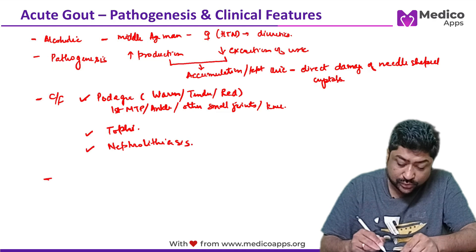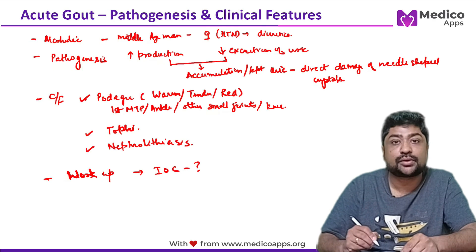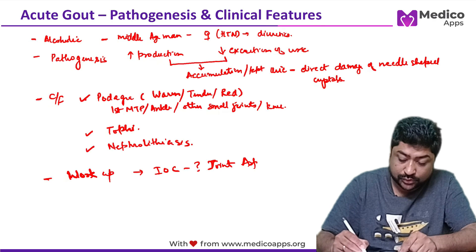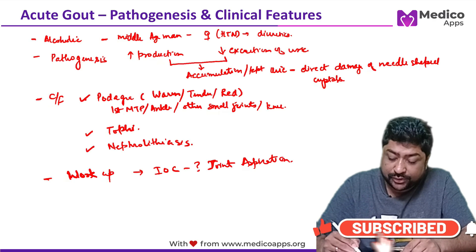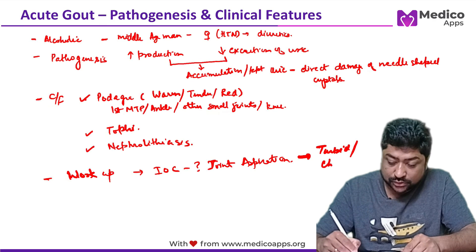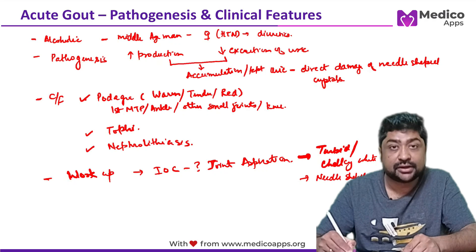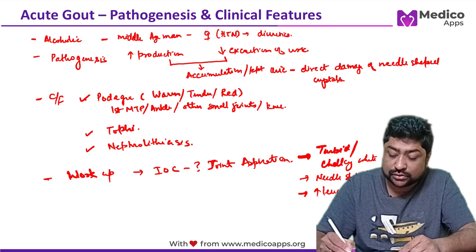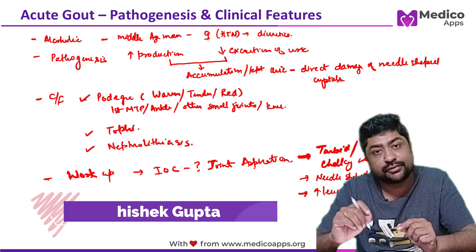For investigation and workup, the investigation of choice — which has been asked in examinations — is examination of joint aspiration fluid. We aspirate the fluid, look at it under the microscope, and get our diagnosis. The aspirate can be chalky white in color and turbid. You will find needle-shaped negatively birefringent crystals seen under polarized light, and increased leukocyte count between 2,000 to 6,000.